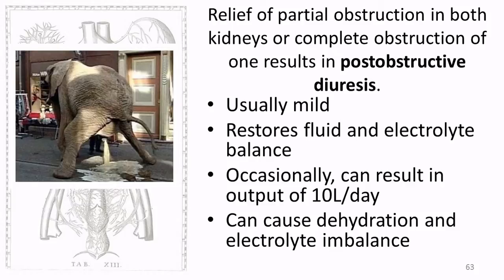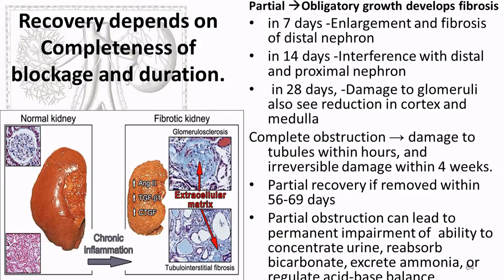Once the obstruction is fixed, post-obstructive diuresis occurs — the patient starts having lots of urination. It's usually mild at first but can reach up to 10 liters a day — imagine five 2-liter bottles of soda. They must take in at least that much fluid to stay hydrated, and they'll lose significant electrolytes, so maintenance involves plenty of electrolyte replacement like Gatorade.